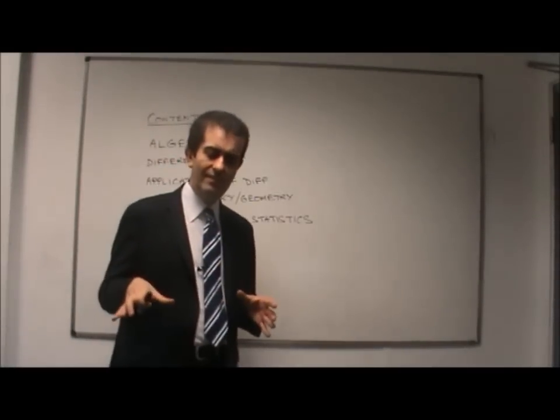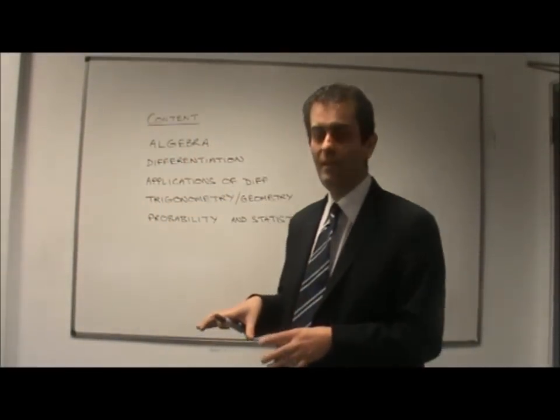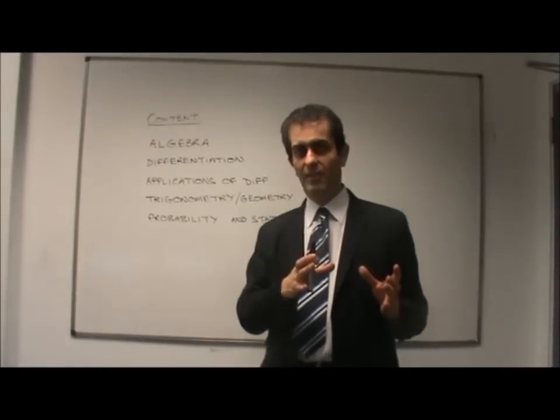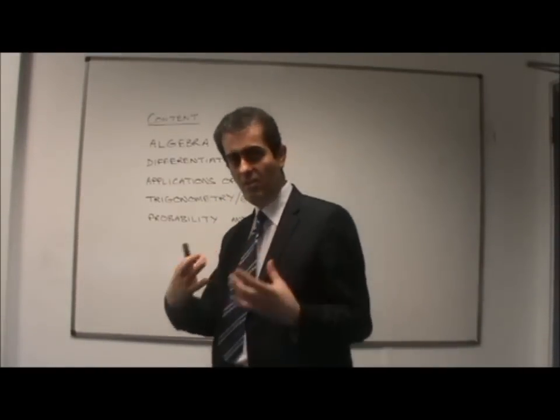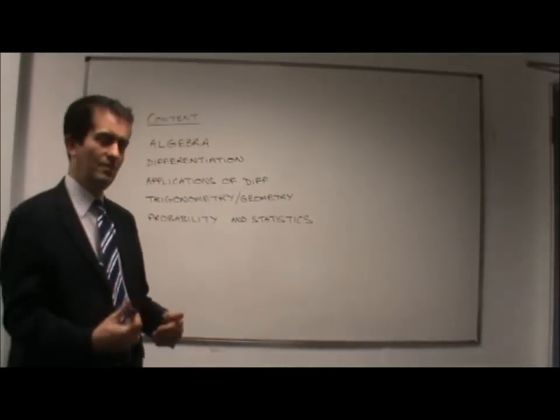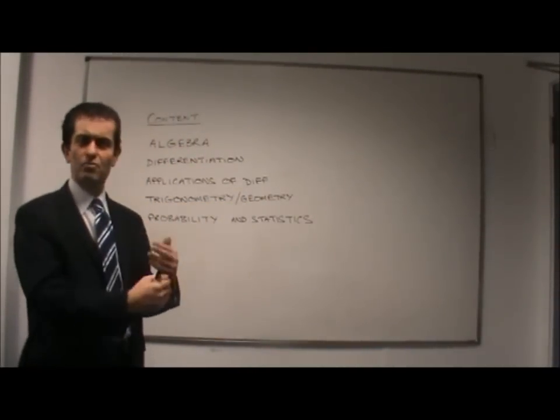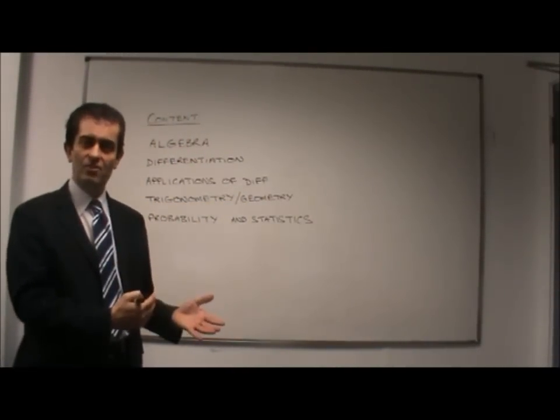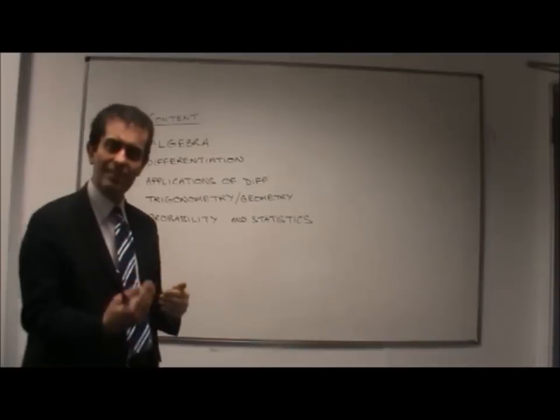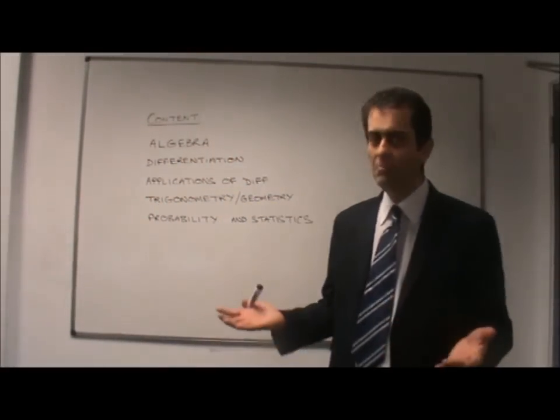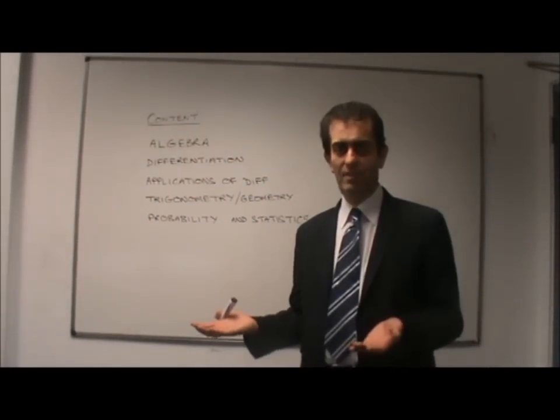Now, we all understand that the Leaving Cert exam papers are in two different sections. We have section A, which is about the theory, the background theory of the course, which is pretty much what to expect in the questions that you're going to be asked, whereas in section B, the context and application section, nobody knows what's going to happen there.